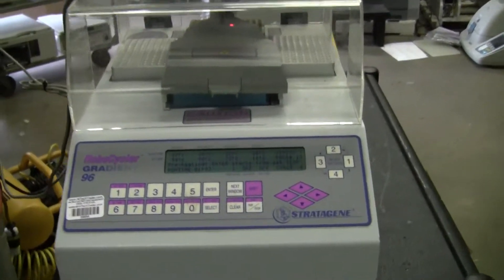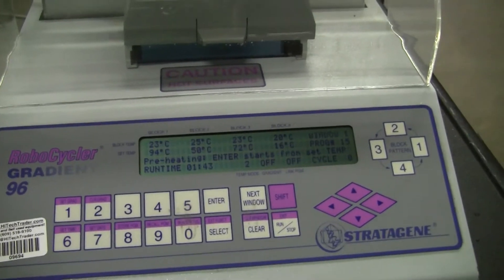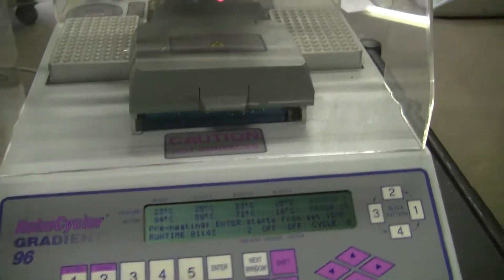Hi, this is Michael Naitow from HitechTrader. Today we're looking at a RoboCycler. This is a Stratagene Gradient 96 well plate unit.